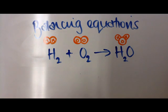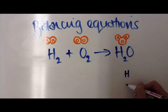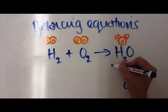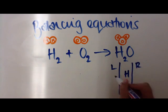So the first thing we have to do is work out what we've got on the left hand side and what we've got on the right hand side. I've got hydrogen and I've got oxygen in my equation. The L means left and the R means right. So let's put it in a table.